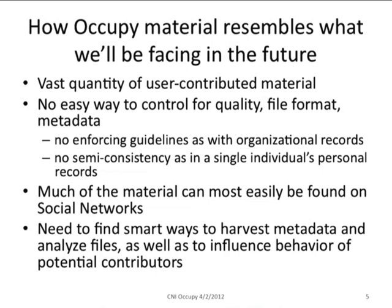There's no easy way for us to control for quality, file format, or metadata. If we're taking in organizational records, that organization can at least try to enforce guidelines on material that later gets handed over to the library or archive. Even with a single individual's hard disk, there's some degree of consistency in file naming conventions or file formats. But there's no way we can get this with a vast quantity of user-contributed material. Much of this material can most easily be found on social networks, which adds issues of rights and terms of use — these are not open systems, so it's harder to harvest things from them.